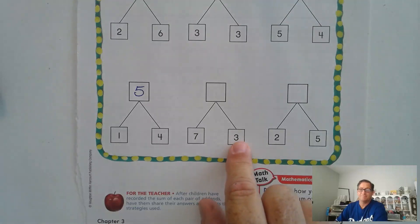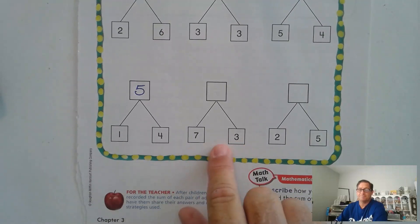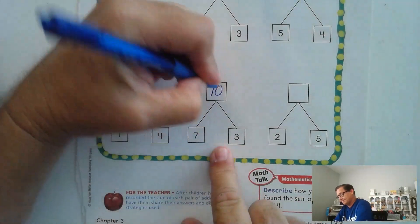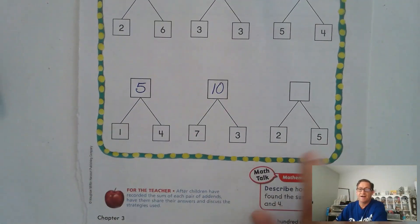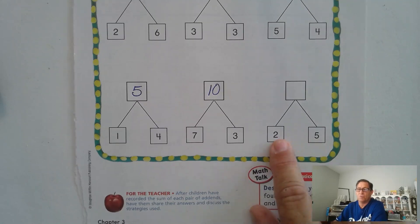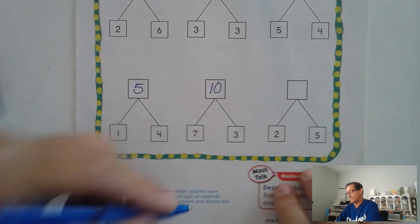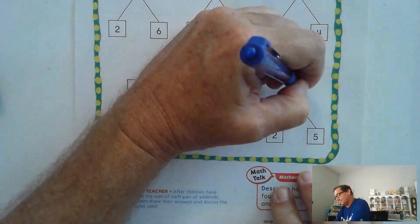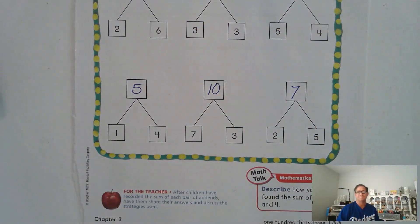Seven and three — that makes a ten, right? And five and two, or two and five. One way to do it is starting at five and add two more: five, six, seven. Or you could have started at two and added five to that. However you did it, you would come up with seven.